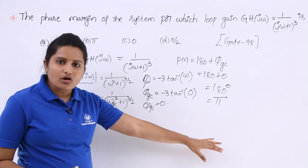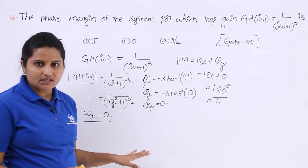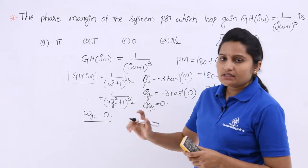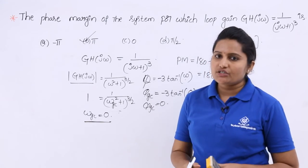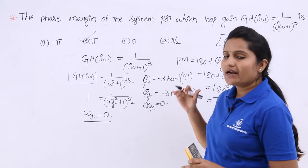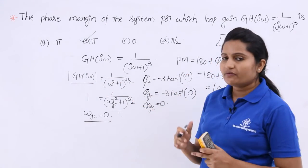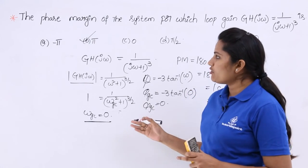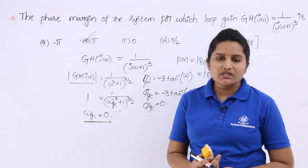So, we solve problems related to phase margin, gain margin, gain crossover frequency, and phase crossover frequency in this way — definitions are very important. For this problem, option B is correct: the phase margin is 180 degrees, that is pi. For any such problem, first take the magnitude and phase of the transfer function, then apply the definitions to link your solution.